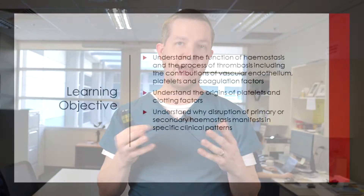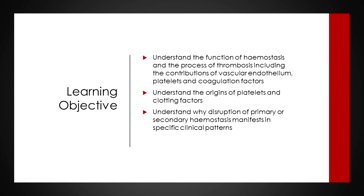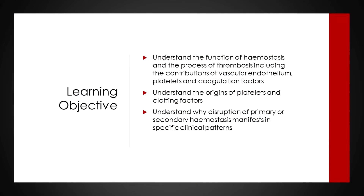The learning objectives here will be understanding the function of hemostasis and how the body maintains balance, including the contributions of the vascular endothelium, the platelets, and the coagulation factors. Those three together are the really important players, and how they interact determines whether we have healthy physiological clot formation or inappropriately low or high coagulation. We also want to understand where platelets and coagulation factors come from, and understand the disruption of primary versus secondary hemostasis and how it manifests.